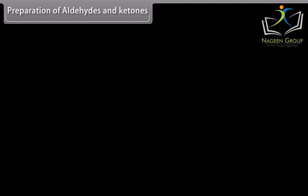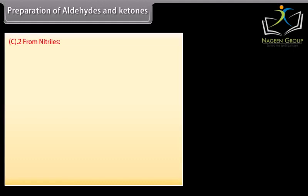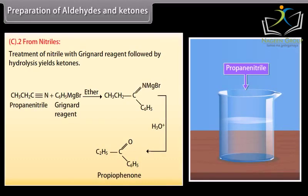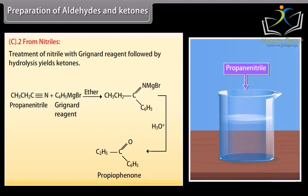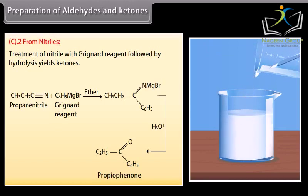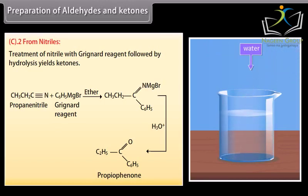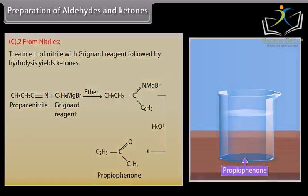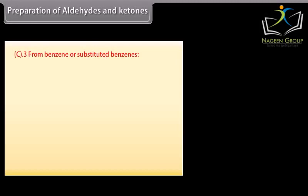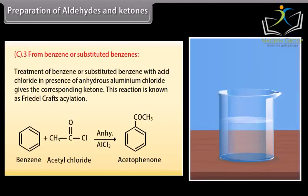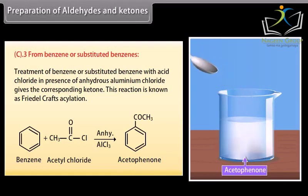From nitriles: treatment of a nitrile with a Grignard reagent followed by hydrolysis yields ketones. A Grignard reagent in ether reacts with propanenitrile to form an intermediate, which upon hydrolysis gives propiophenone. From benzene or substituted benzenes: treatment of benzene or a substituted benzene with an acid chloride in the presence of anhydrous aluminium chloride gives the corresponding ketone. This reaction is known as Friedel-Crafts acylation.